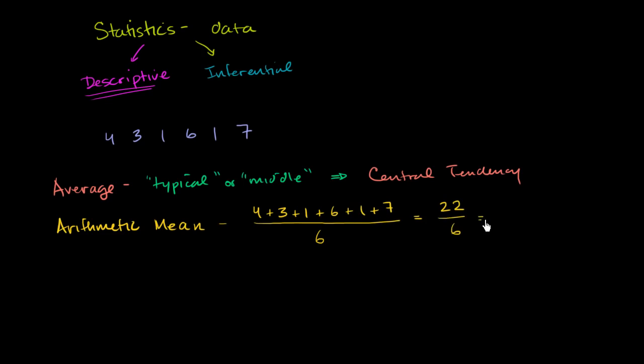And we could write this as a mixed number. 6 goes into 22 three times with a remainder of 4. So it's 3 and 4/6, which is the same thing as 3 and 2/3. We could write this as a decimal with 3.6 repeating. We could write it any one of those ways, but this is kind of a representative number. This is trying to get at a central tendency.